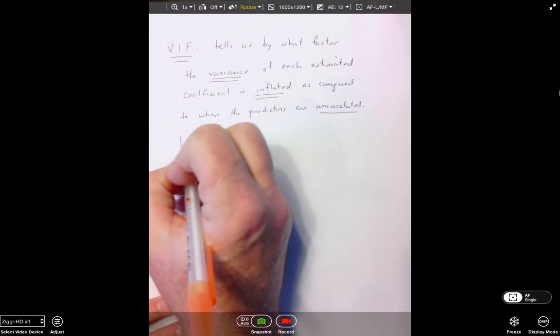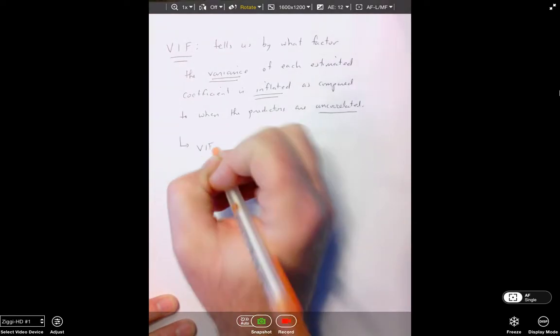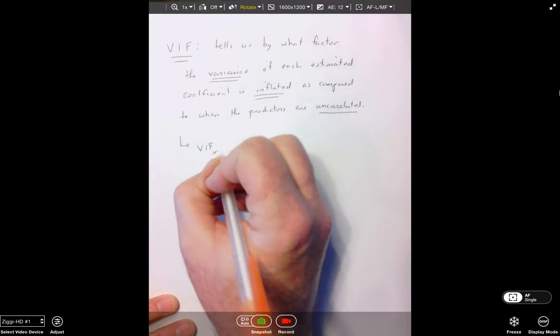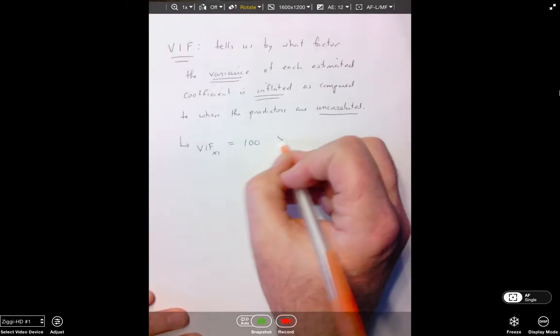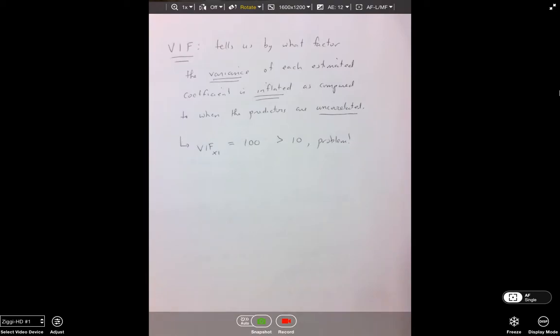So, for example, let's say that we get a variance inflation factor for some predictor, let's say X1. And let's just say that the variance inflation factor for this, we run it and it's 100. So this is clearly greater than 10. So it provides an indication of multi-colinearity issue. So what we'd say here is we would just say that the variance in the estimated regression coefficient for X1 is 100 times higher than if the set of predictors were uncorrelated.